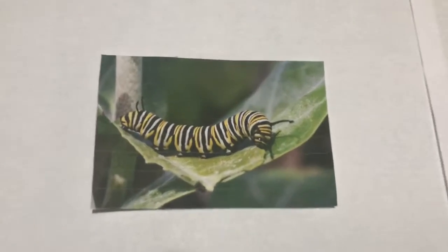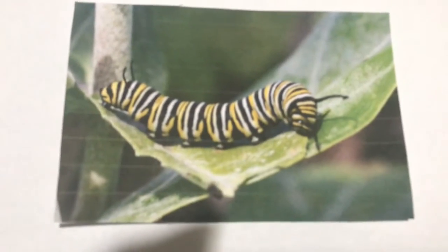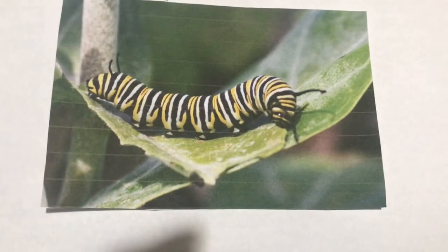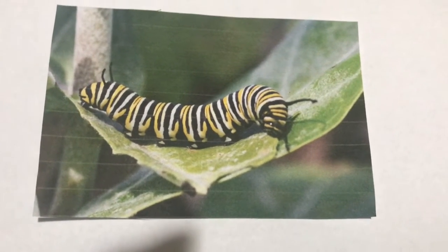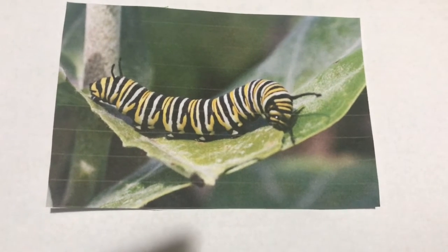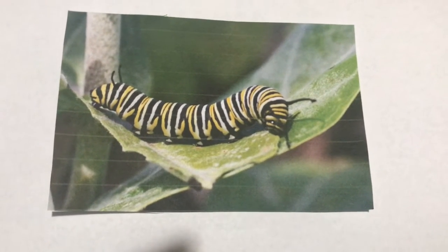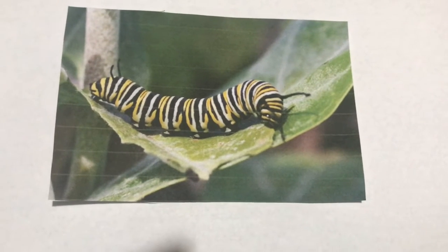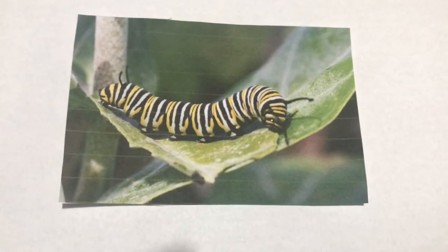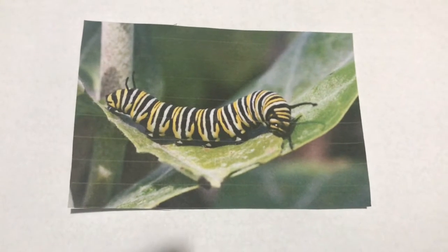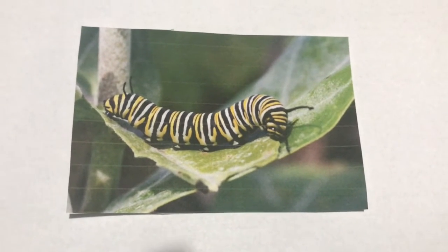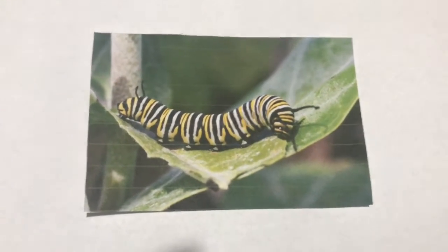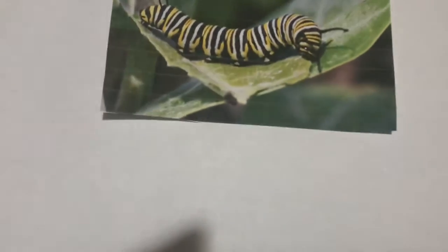Now we have here — what insect is this? ¿Qué insecto es esto? It looks like a worm. Se ve como un gusano. Pero no lo es. It's not a worm. A worm is underground, in the dirt. El gusano está debajo de la tierra. This insect is on a leaf. Este insecto está en una hoja. This is a caterpillar. Esta es una oruga.